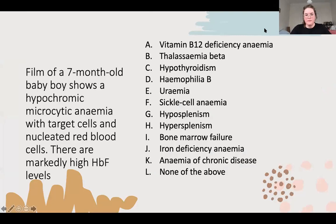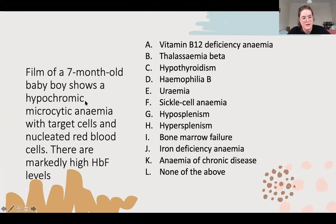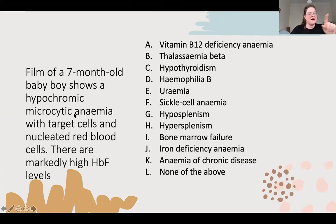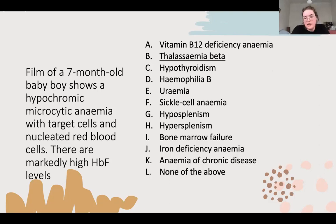Next question: seven-month-old baby, hypochromic microcytic anaemia, target cells, nucleated blood cells, and high HbF. This is most likely beta-thalassaemia major - it's a particularly bad thalassaemia because it's happening early. It's around the time when this patient changes from fetal haemoglobin to adult haemoglobin, and clearly something's gone wrong.